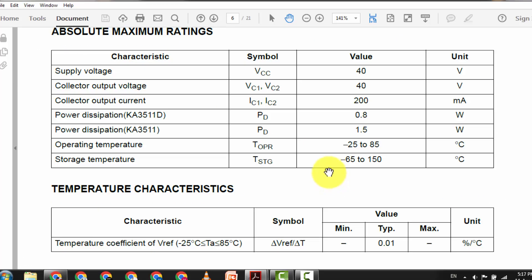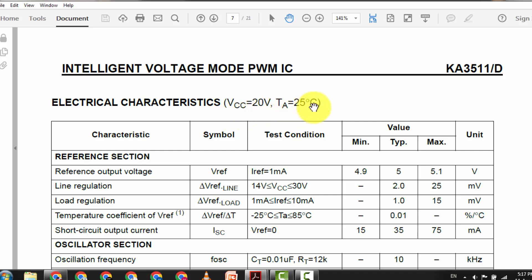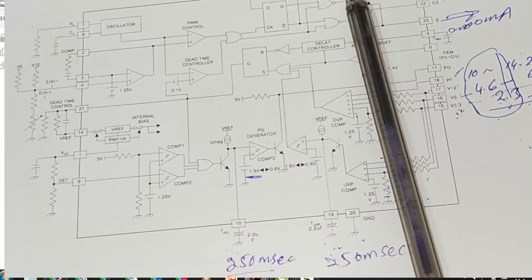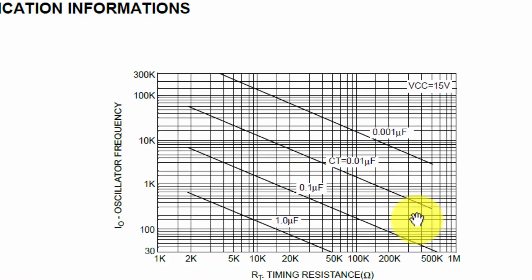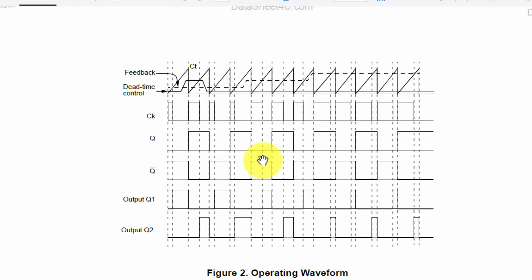The datasheet test condition specifies oscillator frequency at 10 kHz with VCC at 20V, temperature 25°C, CT = 0.01 µF, and RT = 12 kΩ. This is the test condition frequency, not the maximum. Output saturation voltage is 1.1V collector-to-emitter when driving. The oscillator frequency selection chart shows RT timing resistor versus capacitor values at VCC 15V - the IC can operate up to 400 kHz.